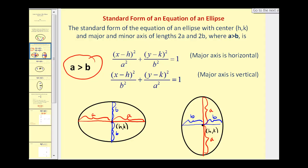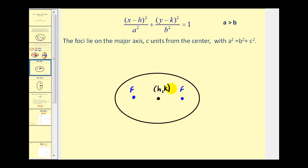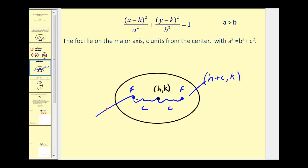There is one other key component about an ellipse that we need to find, and that is the foci. When we have a horizontal major axis, the foci lie on the major axis c units from the center, with a squared equal to b squared plus c squared. This should remind you of the Pythagorean Theorem, but remember that a is the largest of the three, so a squared will be on one side of the equal sign by itself. Once we calculate c, if the major axis is horizontal, the coordinates of the two foci are h plus c comma k, and h minus c comma k — we add or subtract c from the x coordinate.